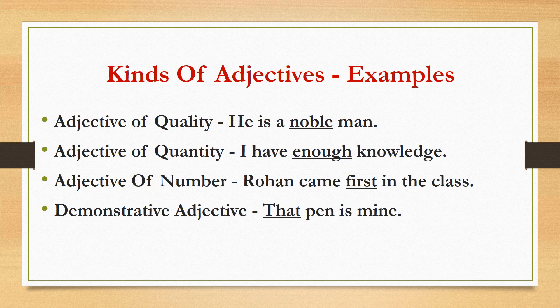Adjective of quantity: I have enough knowledge. The word enough describes the quantity of knowledge I have. Adjective of number: Rohan came first in the class. Here, first is the rank or exact number Rohan got in the class. Demonstrative adjective: That pen is mine. Here, we are pointing out that pen. So the word that is the example of a demonstrative adjective.